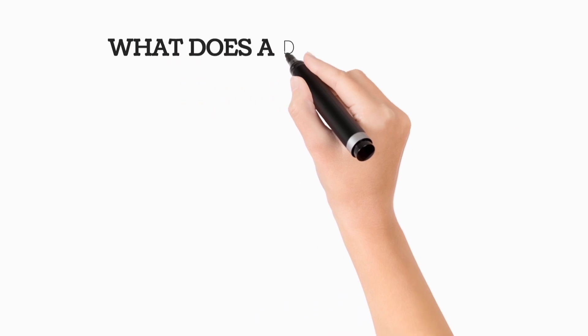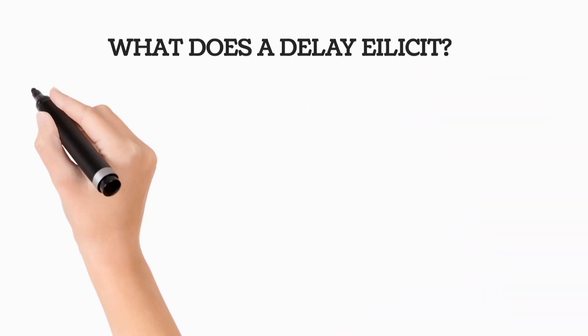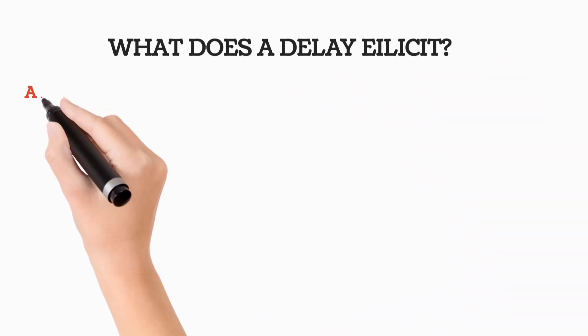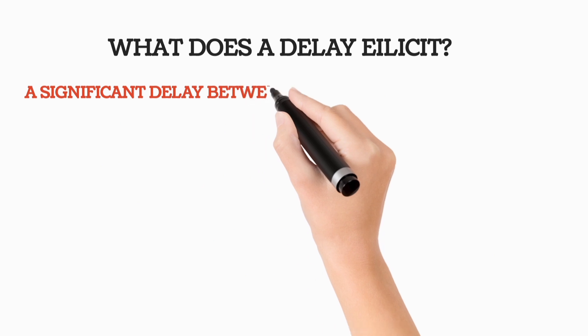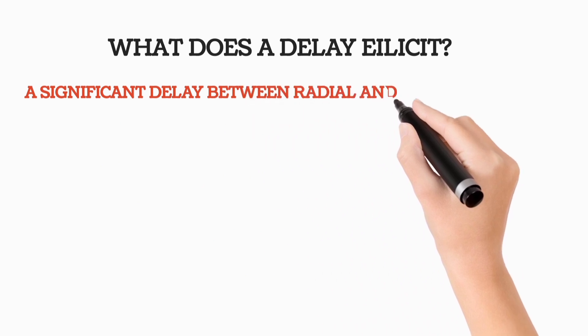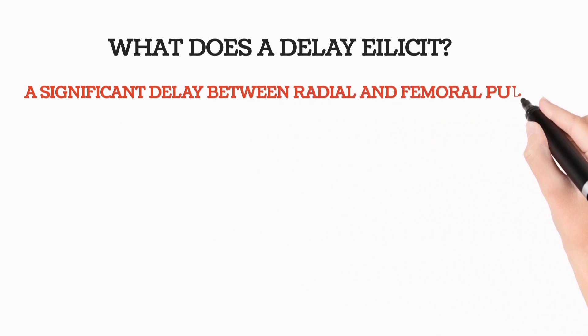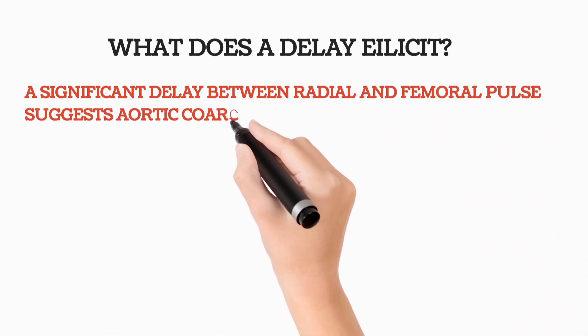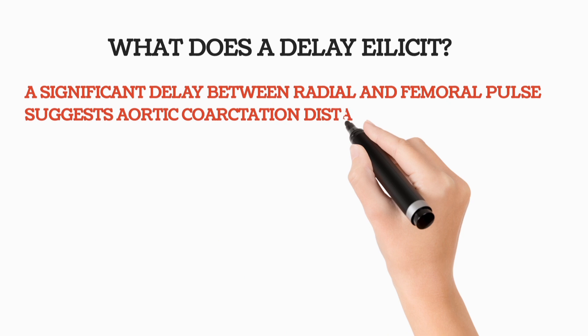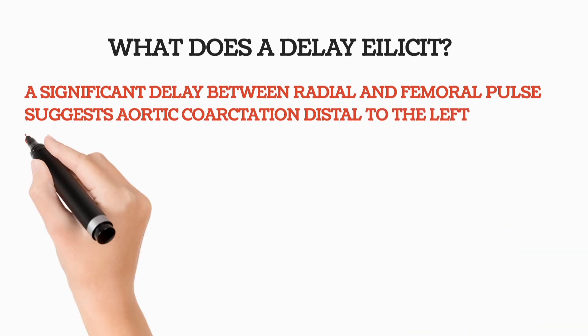What does a radio-femoral delay indicate? A significant delay between the radial pulse and the femoral pulse suggests aortic coarctation distal to the left subclavian artery.